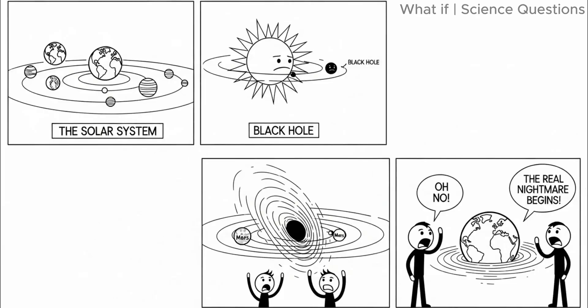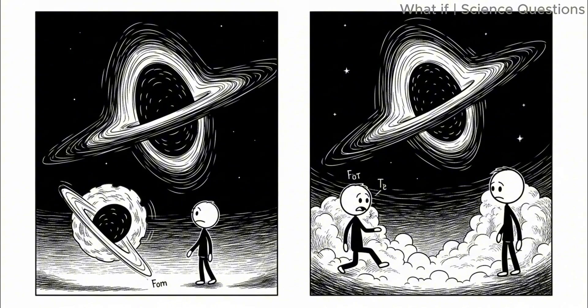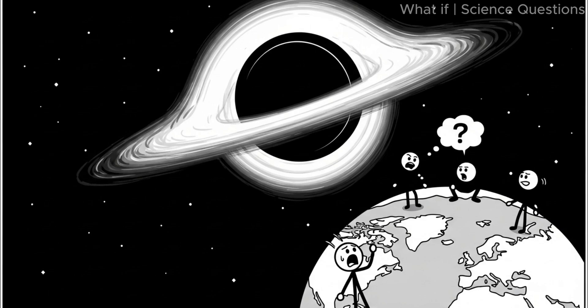The real nightmare begins when the black hole enters the inner solar system. Depending on its size and exact trajectory, there are two main scenarios. Scenario one, it passes nearby, without direct collision.